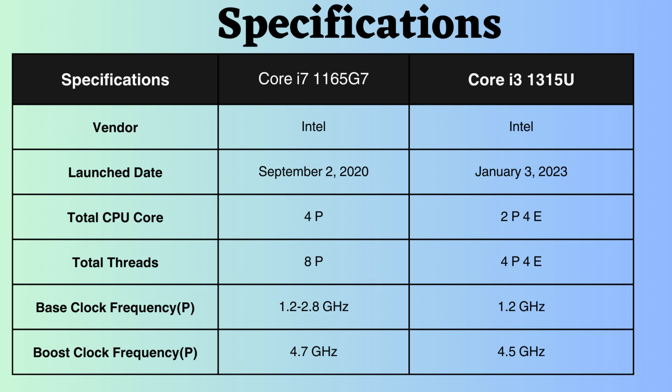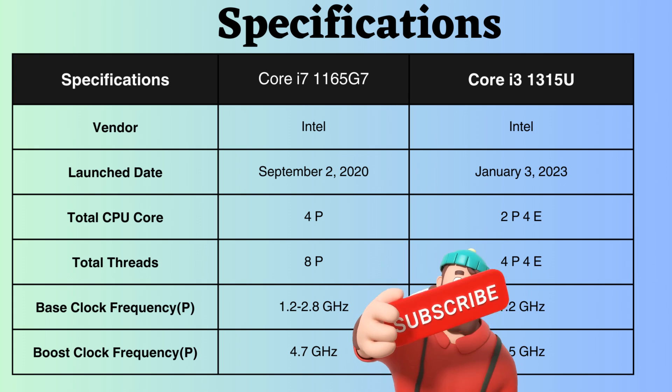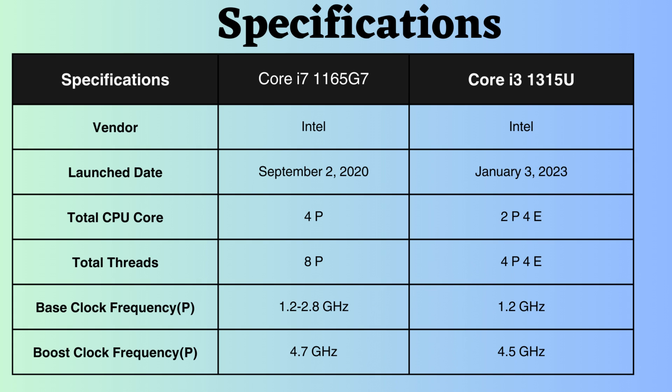In terms of performance cores, the base clock frequency of the Core i7-1165G7 ranges from 1.2 to 2.8 GHz, while that of the Core i3-1315U is 1.2 GHz. The higher base clock frequency of the Core i7-1165G7 may result in better performance under normal CPU loads. The boost clock frequency of the Core i7-1165G7 is 4.7 GHz, while that of the Core i3-1315U is 4.5 GHz, giving the i7 an edge under heavy CPU loads.